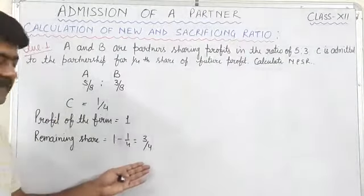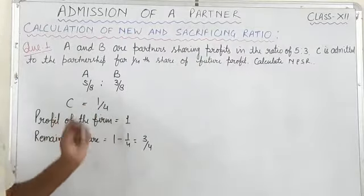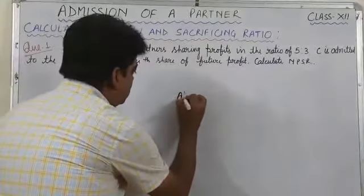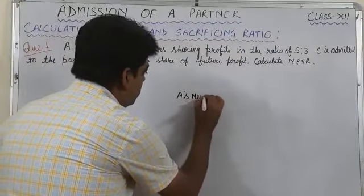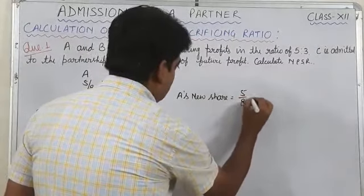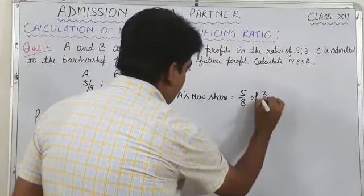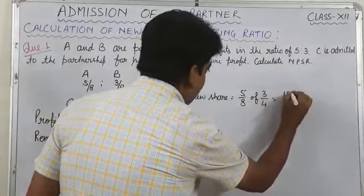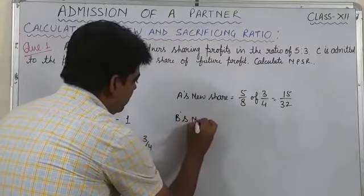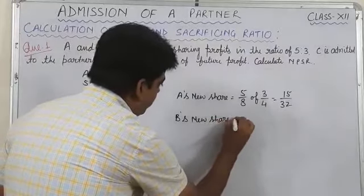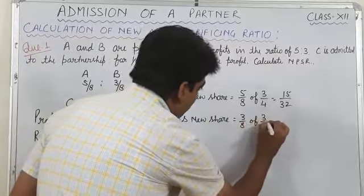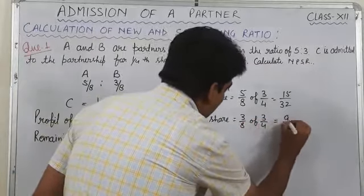So this 3/4 will be distributed among A and B in their old profit sharing ratio which is 5:3. So A's new share will be 5/8 of 3/4, which is 15/32. Similarly B's new share will be 3/8 of 3/4, that is 9/32.